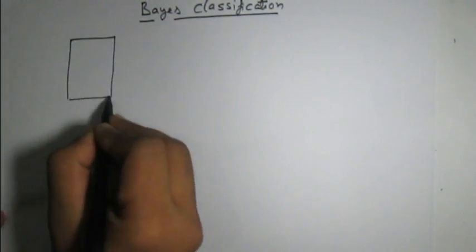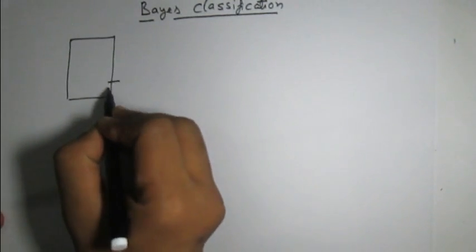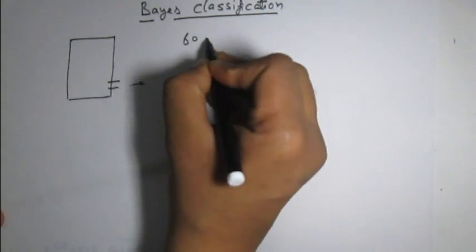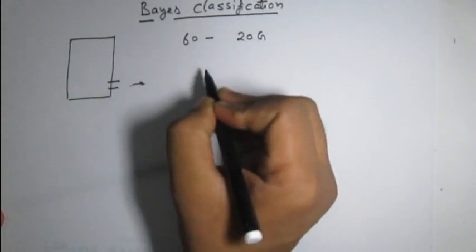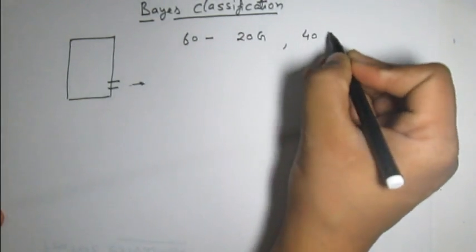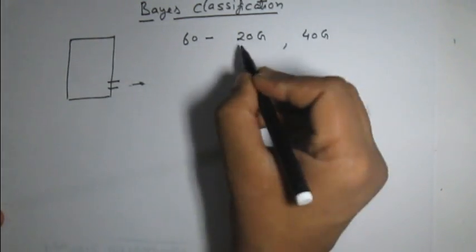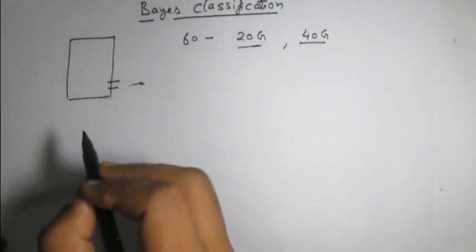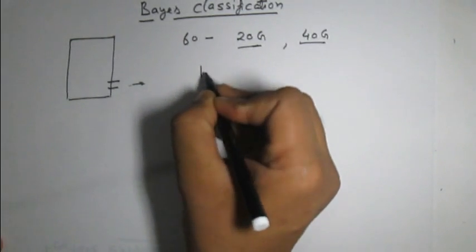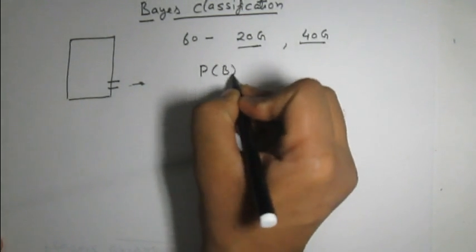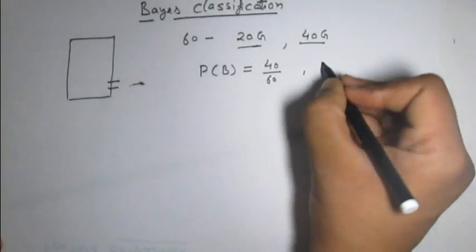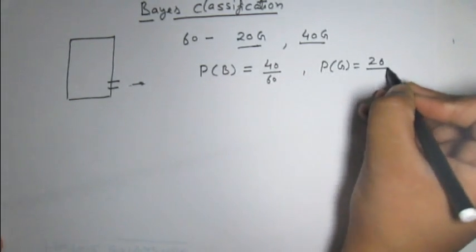Let us discuss Bayes' theorem classification. Suppose we have a class with some students, either boys or girls, coming out of the room. Out of 60 students, 20 were girls and 40 were boys. So the probability of a student being a boy is 40 divided by 60, and the probability of being a girl is 20 divided by 60.